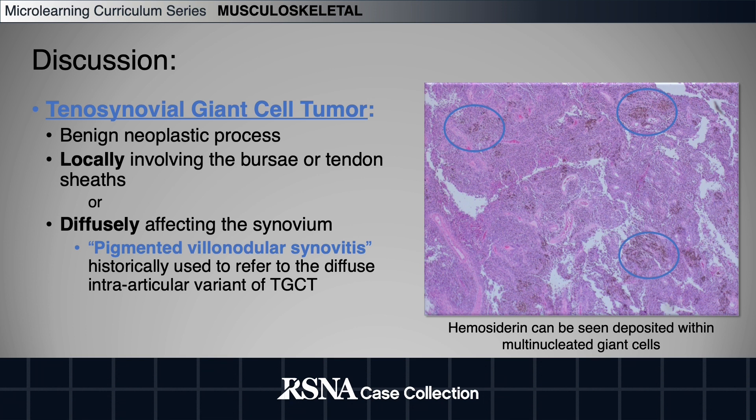From a histologic perspective, recurrent hemorrhage of abnormal synovium leads to hemosiderin deposition within multinucleated giant cells, which gives it its classic appearance on imaging.